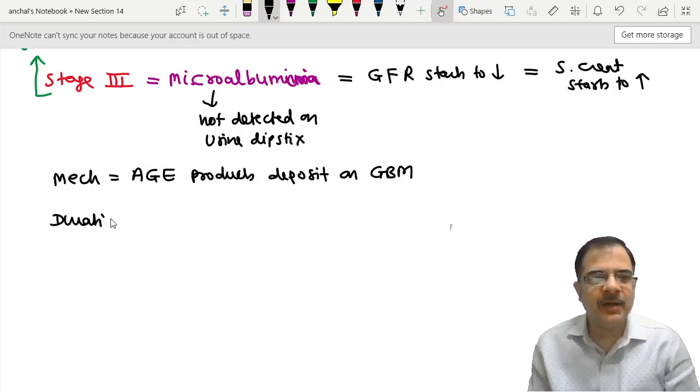Duration when it develops is 10 years of uncontrolled sugars. Now the treatment. Treatment for this condition is ACE inhibitor, even if BP is normal.